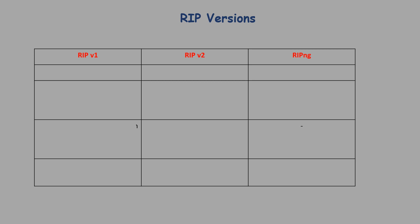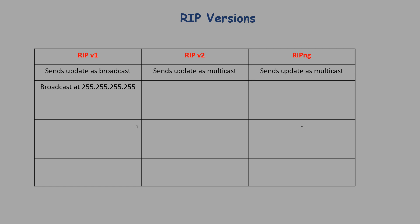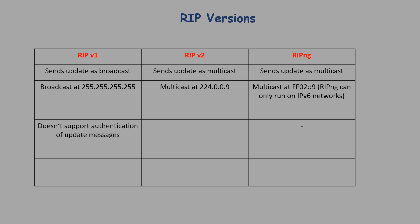RIP version 1 and version 2 are used with IPv4 addresses, and RIPng is used for IPv6 addresses. In RIP version 1, updates are sent as a broadcast packet using IP 255.255.255.255. In version 2, updates are sent as a multicast packet using IP 224.0.0.9. In RIPng, updates are sent as a multicast packet using FF02::9. Version 1 does not support authentication of update messages, while version 2 does. This feature is not available in RIPng.